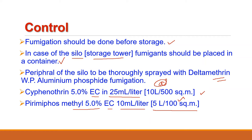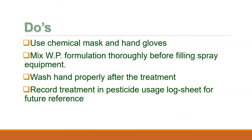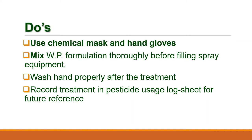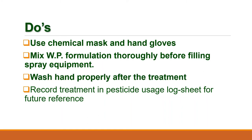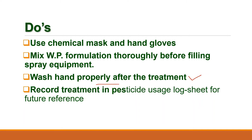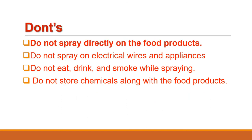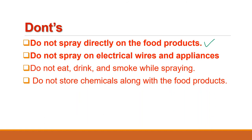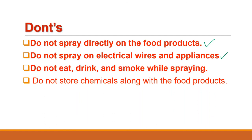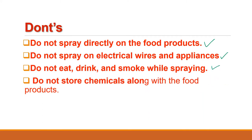While controlling the pest, one should follow these precautions. Use a chemical mask and hand gloves. Mix WP formulations thoroughly before filling spray equipment to avoid clogging of the nozzle. Wash hands thoroughly after treatment and maintain a record of treatment in a pesticide usage log sheet for future reference. Do not spray directly on food products, as they will become non-consumable. Do not spray on electrical wires and appliances. Do not eat, drink or smoke during treatment. Never store chemicals along with food products.